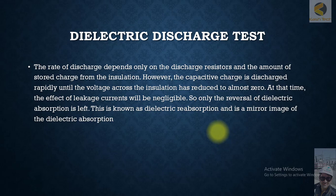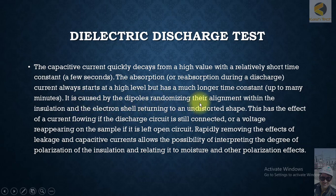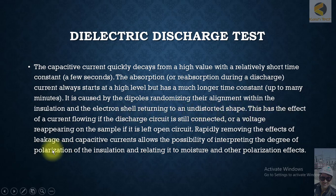The capacitive current quickly decays from a high value with a relatively short time constant of a few seconds. The absorption or reabsorption during discharge cannot always start at a higher value but has a much longer time — up to many minutes. It is caused by dipoles randomizing their alignment within the insulation and electron shells returning to an undistorted shape. This has the effect of current flowing if the discharge circuit is still connected, or voltage reappearing on the sample if it is left open circuit.